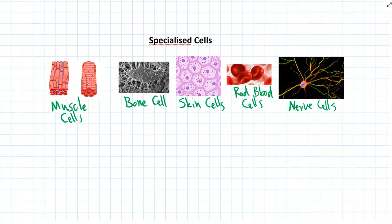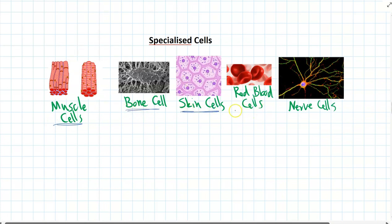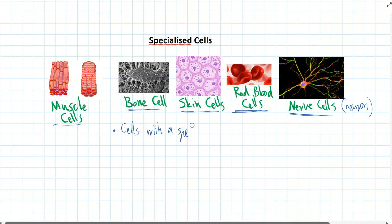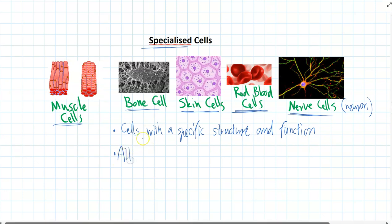Specialised cells are another small area to remember. We have muscle cells, bone cells, skin cells, red blood cells, and nerve cells called neurons. Specialised cells are just cells that have a specific job, so they have a certain structure that helps them to do that job. Every single cell is specialised to do a certain job — there's no cell in our body that's just a generic average cell. All cells are specialised.